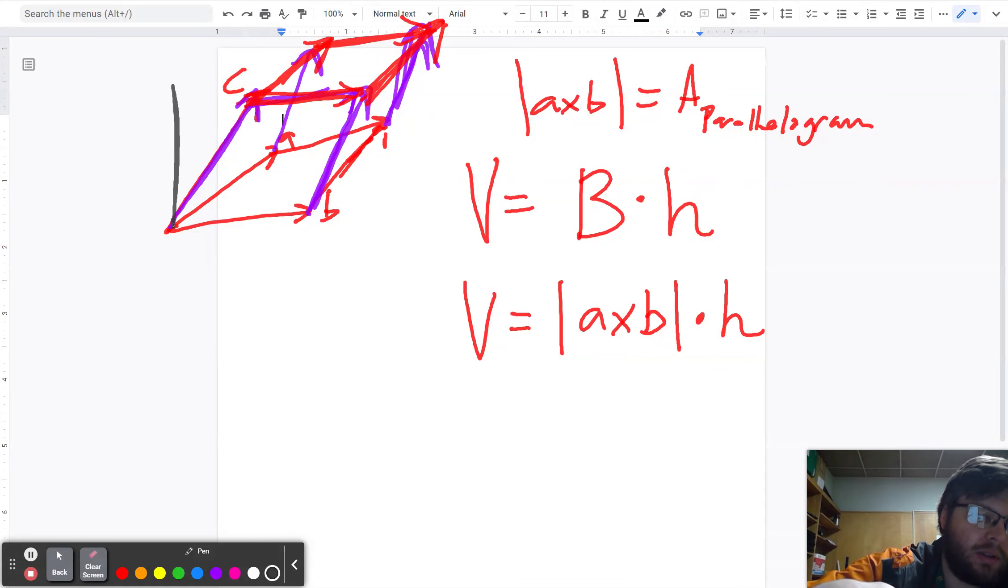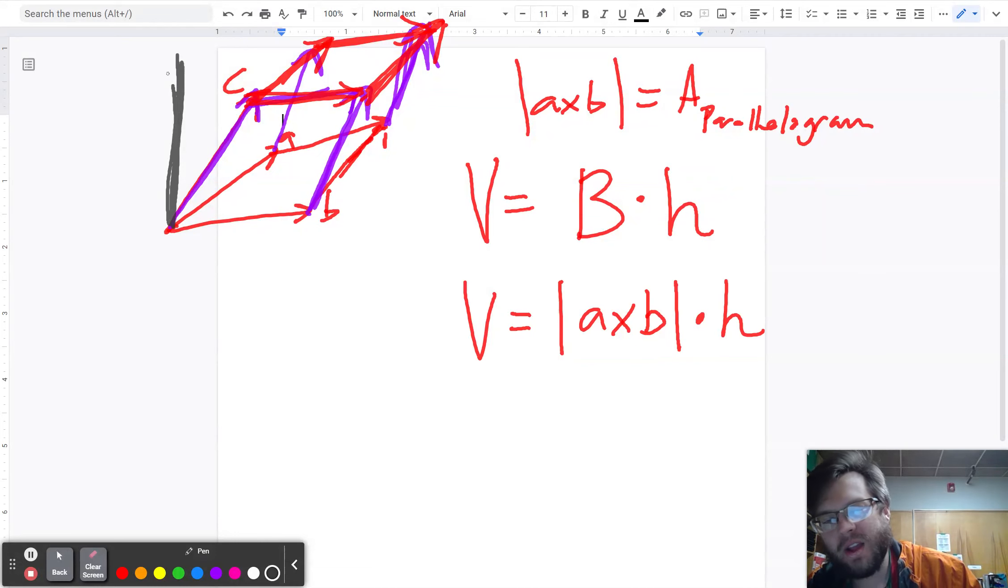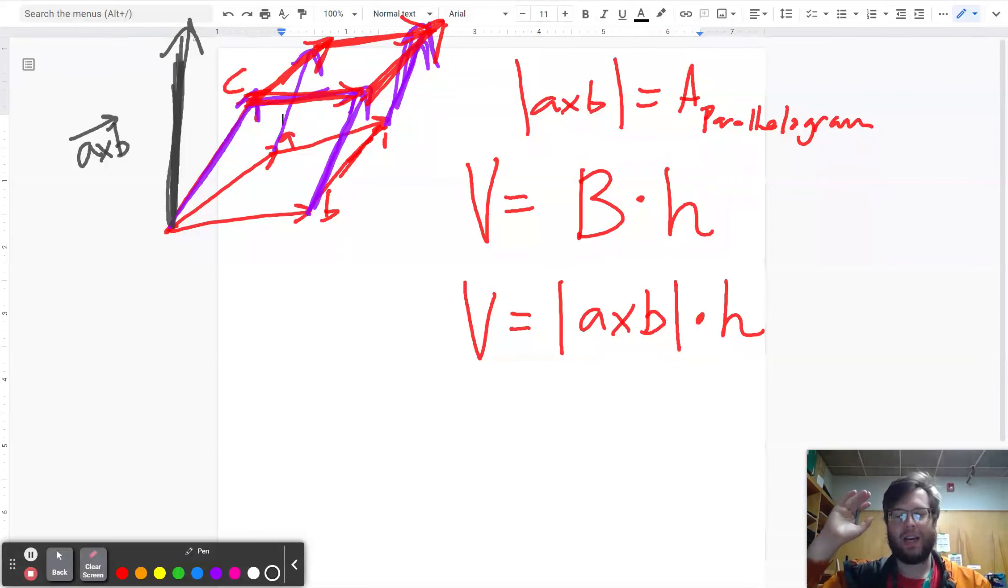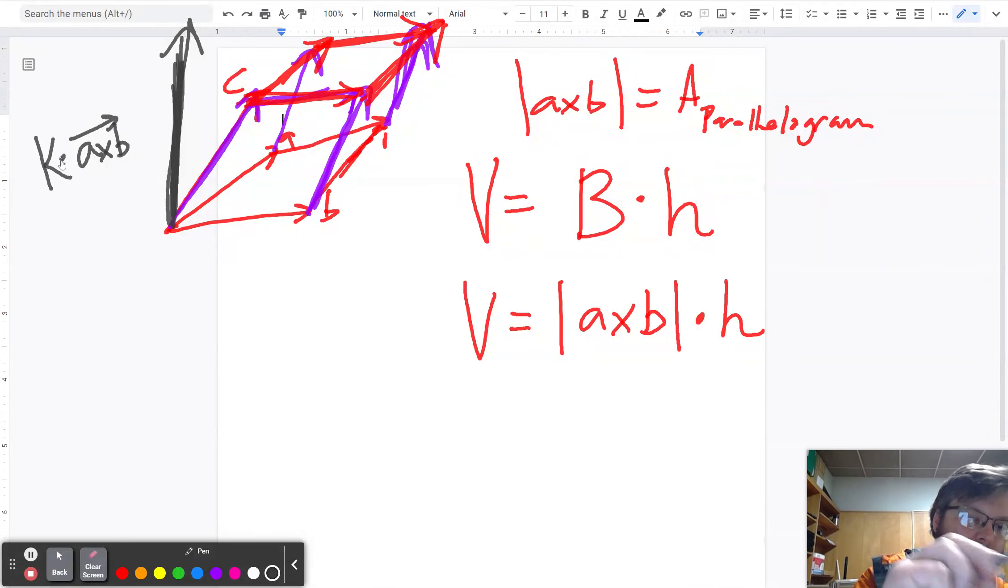One thing I do know is that I know that the cross product tells me a vector that is perpendicular to both A and B. So one thing I do know is that this perpendicular axis is related to the cross product, that the cross product points in this direction. I don't know exactly how high the cross product goes up, but I know that the cross product points in that direction. So I could say it is some multiple of the cross product. I'll just say K times the cross product.